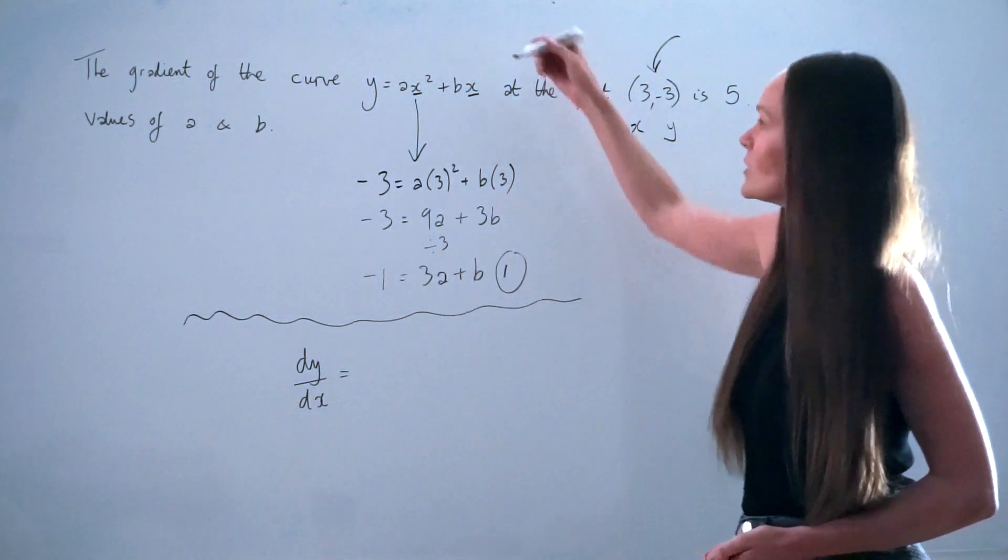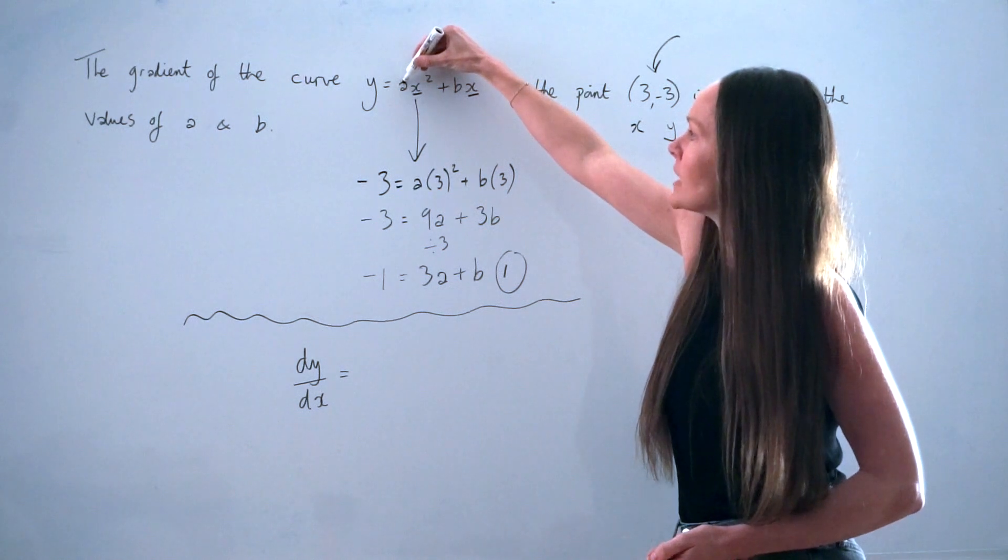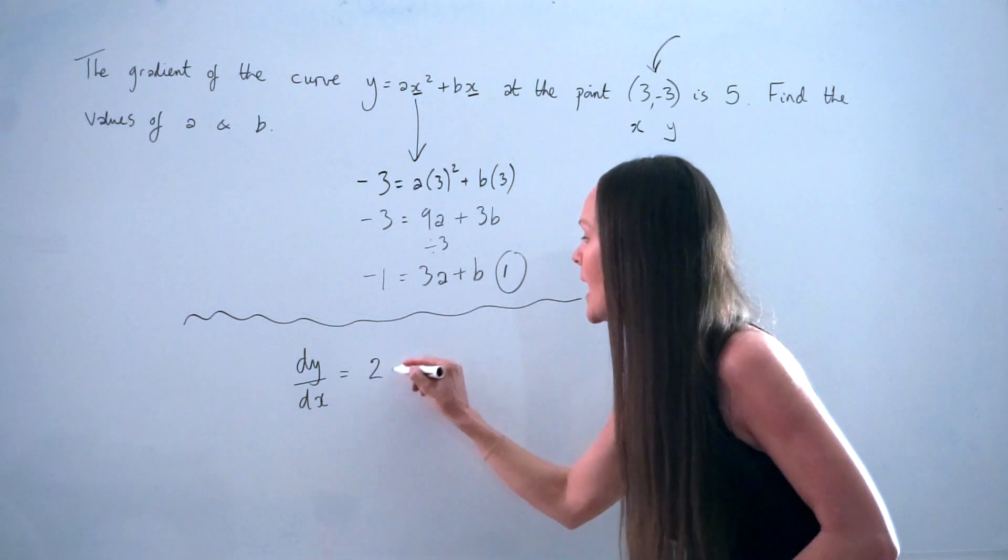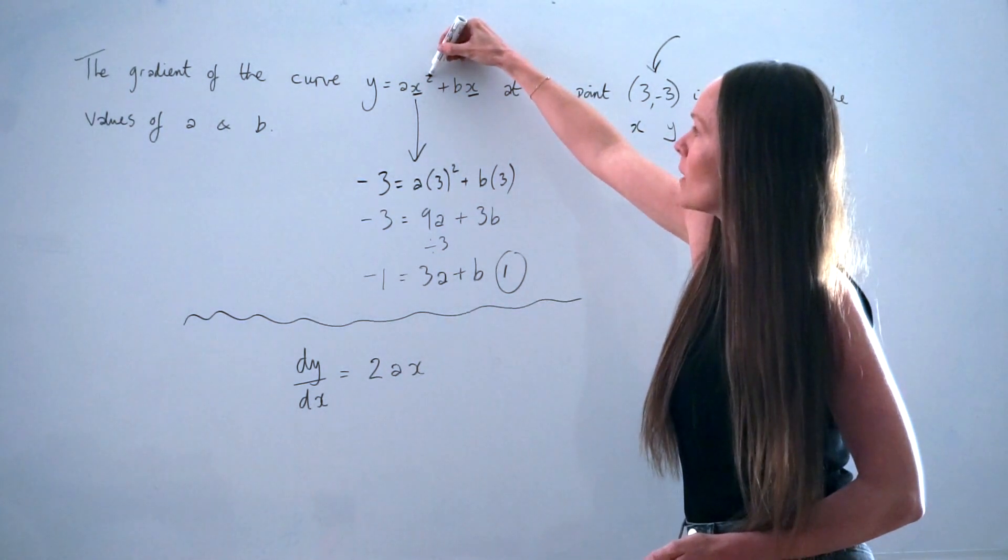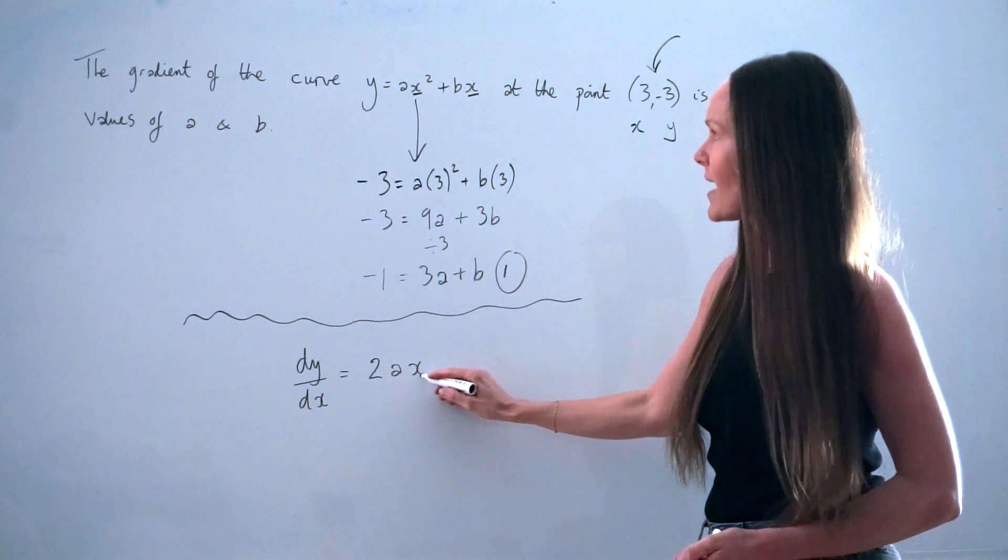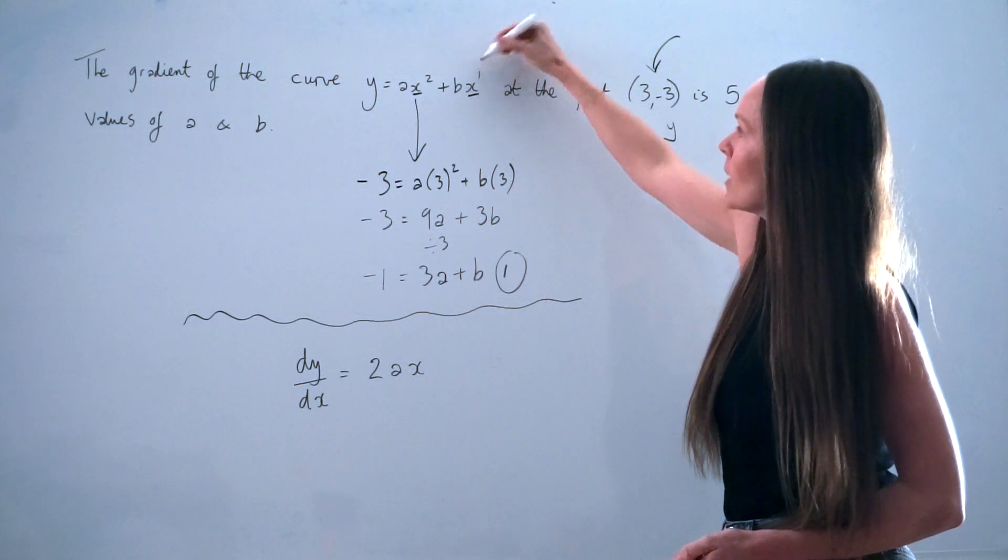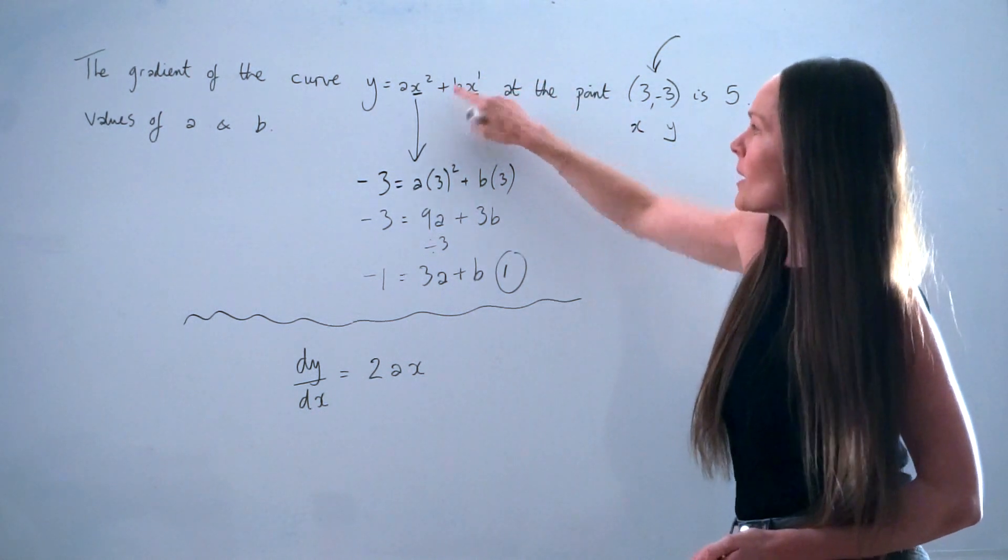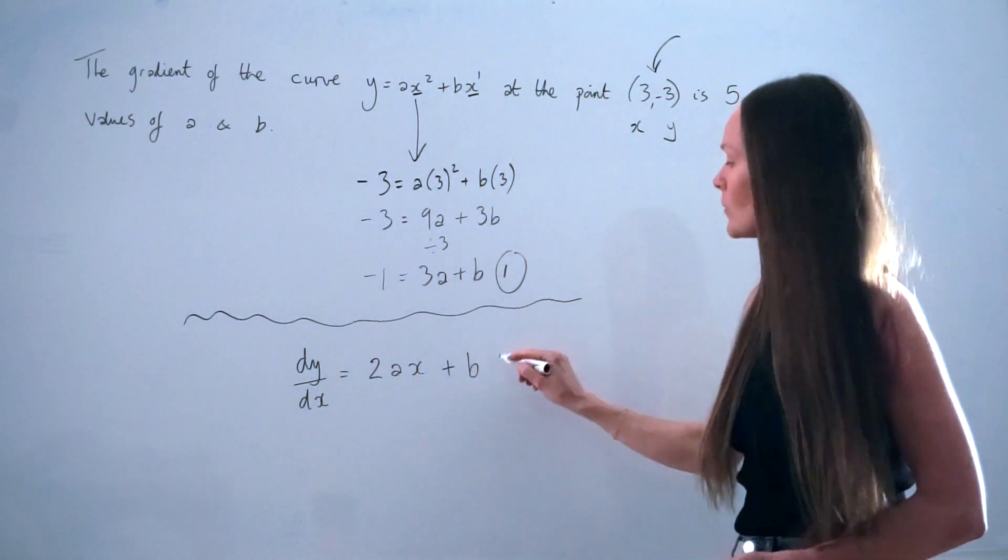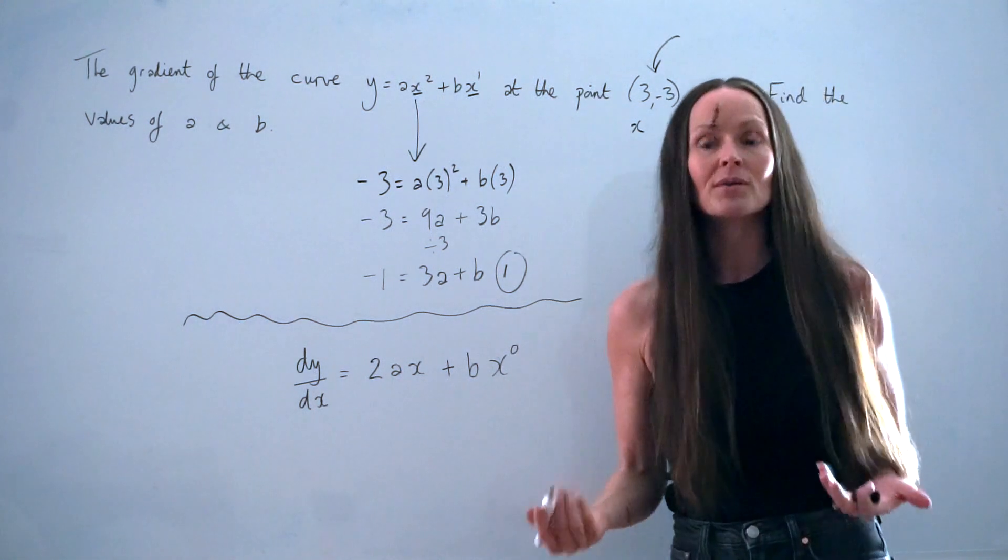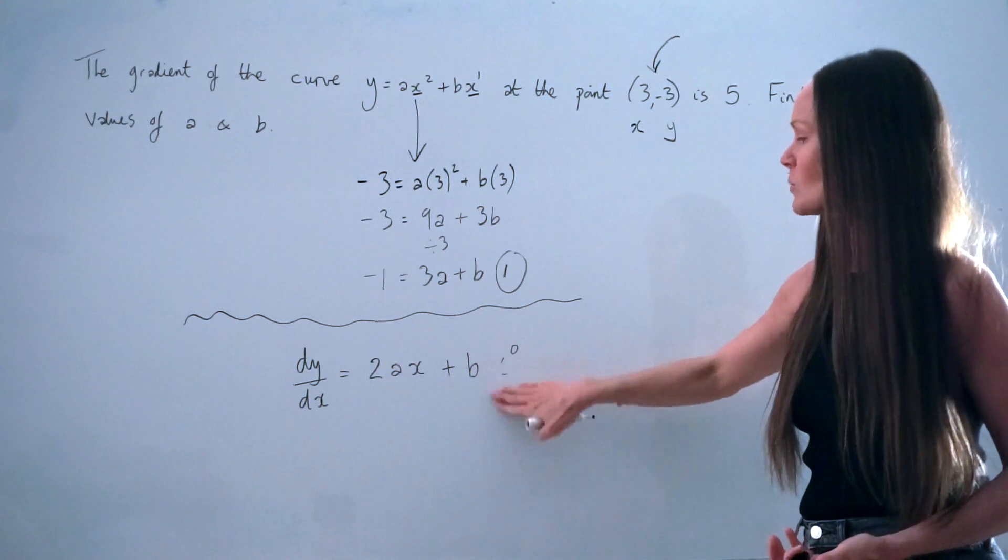So to differentiate, you need to look at the power here, so positive 2, and multiply it with the coefficient here. So 2 times a is 2a. And remember, the power always decreases by 1. So 2 take away 1 is 1, so it's just 2ax. Then if we differentiate this term here, this is like bx to the power of 1. So 1 multiplied by b is b. And if this power here decreases by 1, we get x to the 0. But anything to the power of 0 is equal to the number 1. So b times 1 is just b, so it's just plus b.